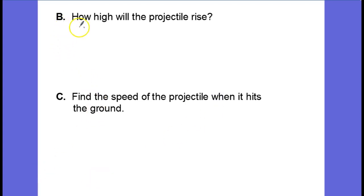In part B, we're asked how high will the projectile rise. It will reach the apex of its ascent when the velocity, the vertical component of its velocity, is equal to zero. So what we will do is find out when s prime of t equals zero.